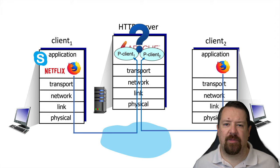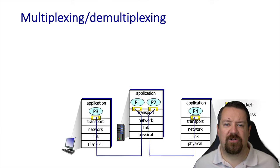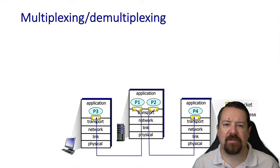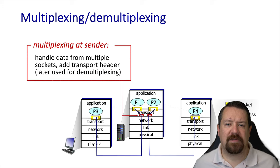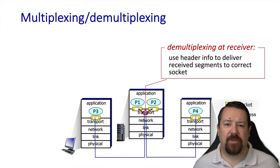On the server side, this system is dealing with multiple clients, so it has to make sure that the correct messages get to the correct clients. And on the client side, it must make sure that the correct messages get to the correct applications. Within our server application, we have multiple processes — shown here as process 1 and process 2 — and each of those processes has their own socket that sends messages to a particular client. The transport layer multiplexes the messages from both processes onto the network layer, keeping track of which is which using port numbers included in the transport layer header.